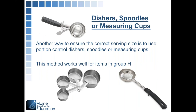Another useful tool when crediting grains is using dishers, spoodles, or measuring cups. This method works well for items in Group H that can be measured by weight dry or by volume once cooked. Spoodles and dishers are probably the most useful tool because they come in specific standard sizes — for example, the gray-handled number eight disher is a half cup, so you know with each scoop exactly how much you're serving.